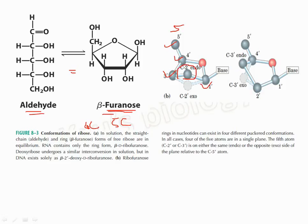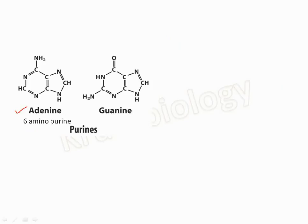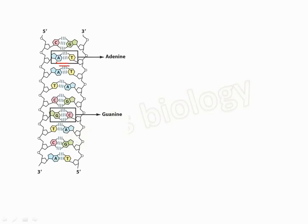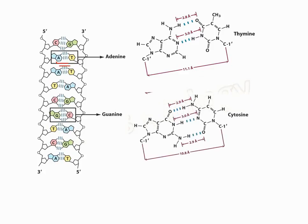In the furanose ring, four atoms are in a single plane. The fifth atom — carbon-2 or carbon-3 — is either on the same side as the reference atom, called endo, or the opposite side, called exo, relative to the five-membered ring. Adenine is 6-aminopurine and guanine is 2-amino-6-ketopurine. Cytosine is 2-keto-4-aminopyrimidine; uracil is 2,4-diketopyrimidine; thymine is the same as uracil but with a methyl group at carbon-5. Adenine pairs with thymine in DNA (or uracil in RNA) via two hydrogen bonds; guanine pairs with cytosine via three hydrogen bonds.